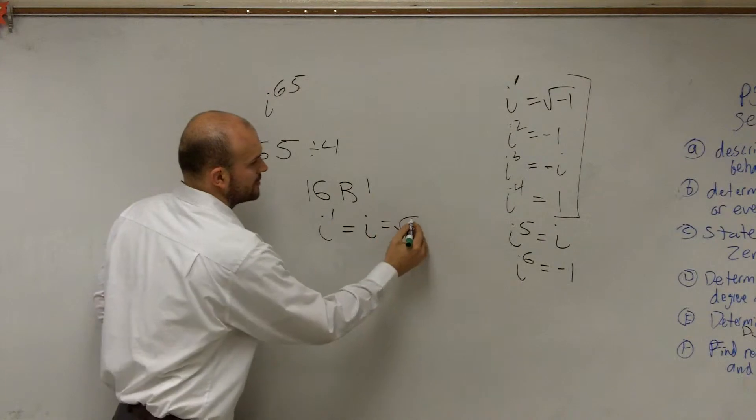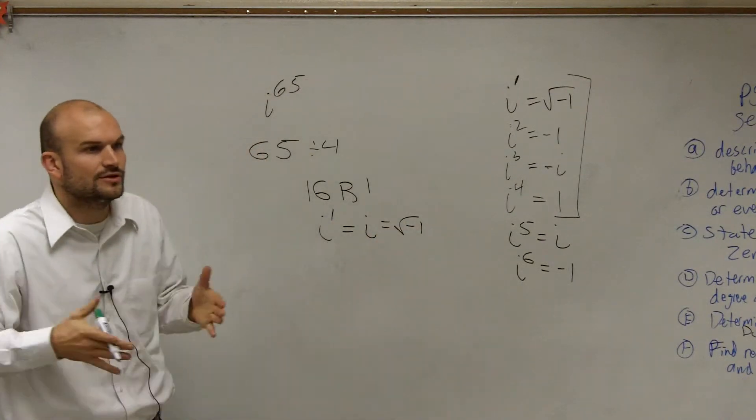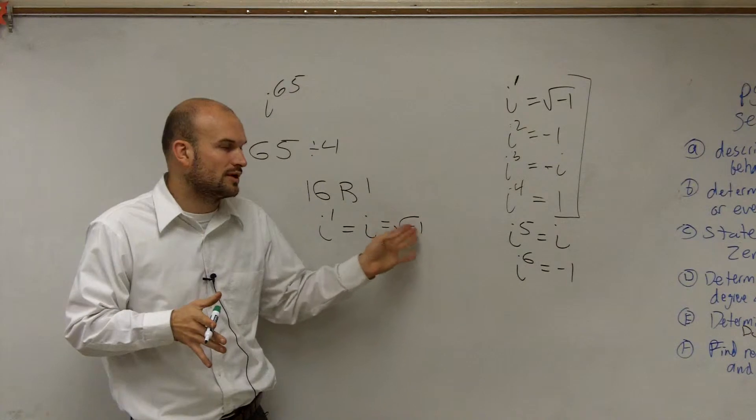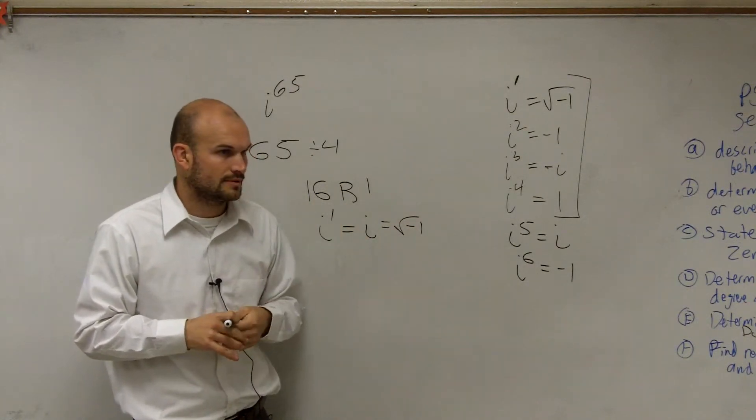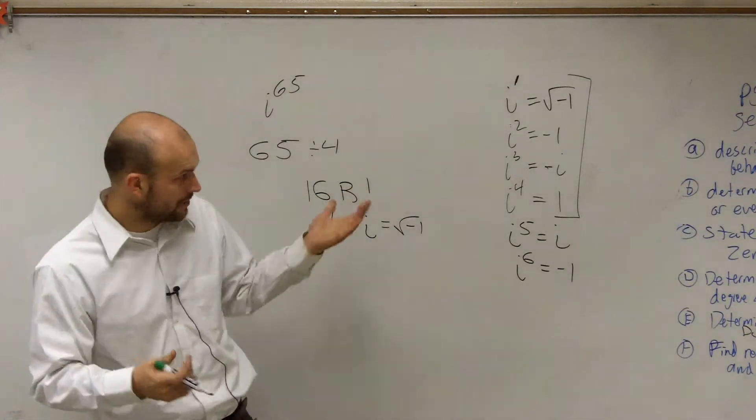I mean, you can rewrite it as square root of negative 1. But we use the definition of square root of negative 1 just so we can understand what i is. But you can just leave your answer just as i. No, I think you should put i to the negative 1. OK.